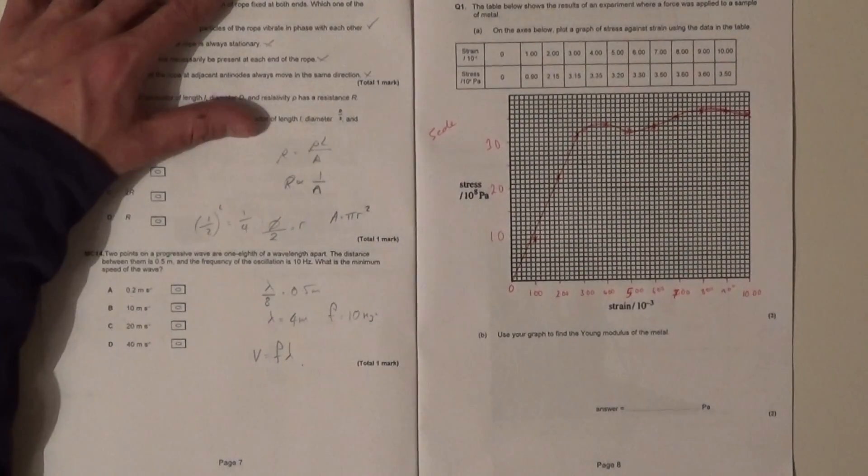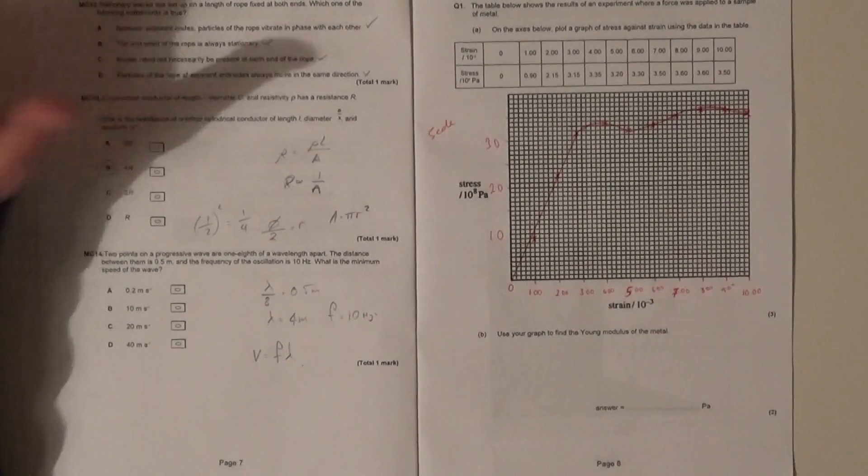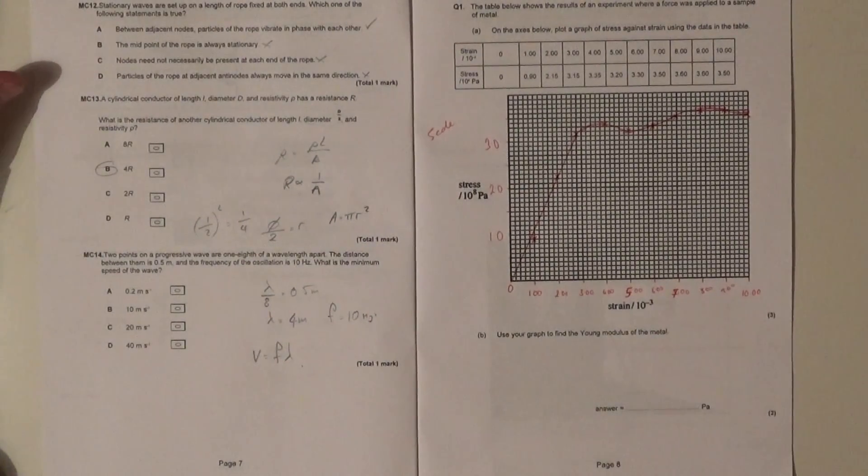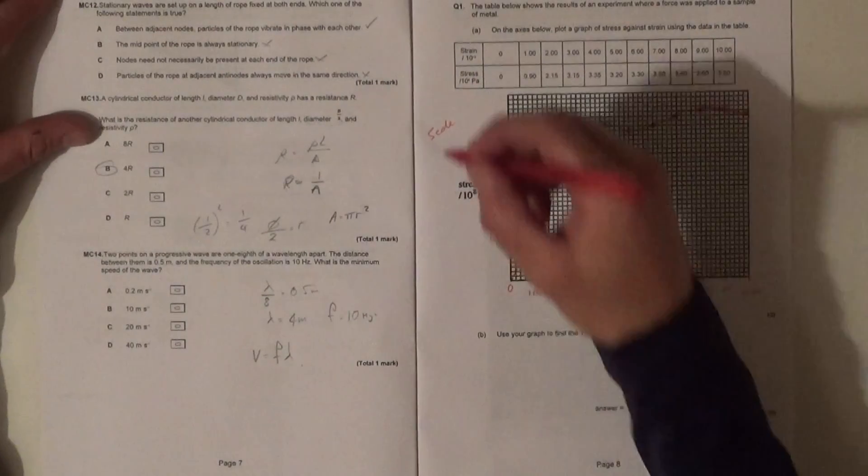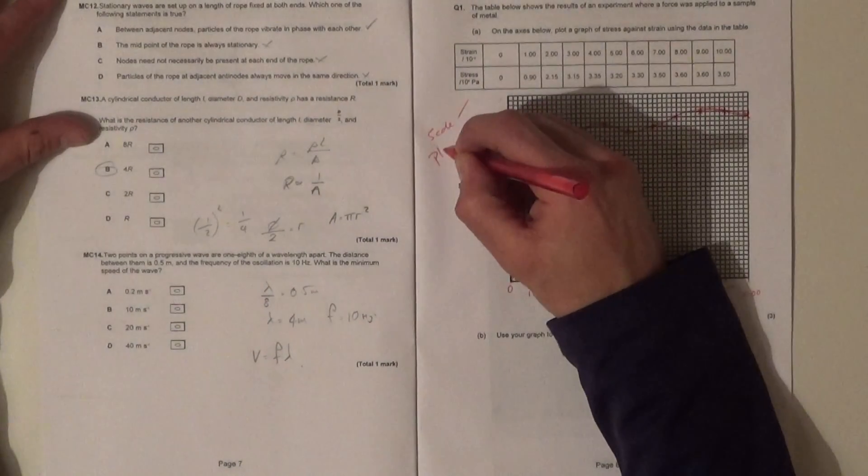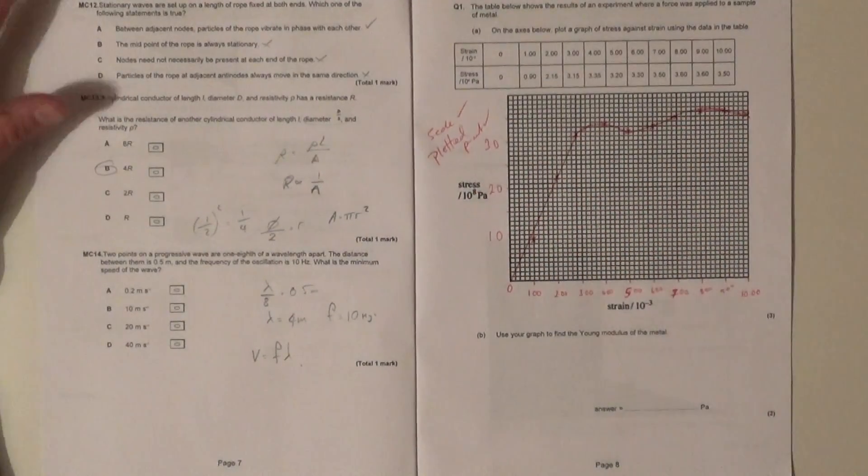Not going up in threes or anything like that. Most people did the same scale, which is the logical thing to do. Second point was for the points being correctly plotted. So scales is the first one, points plotted is the second one.